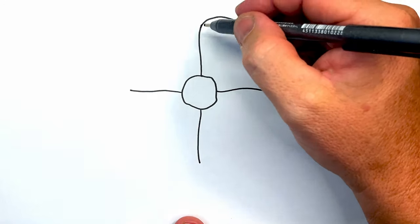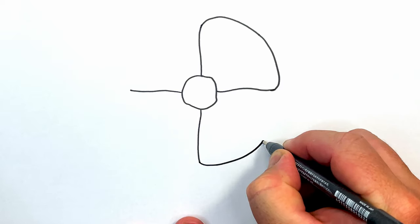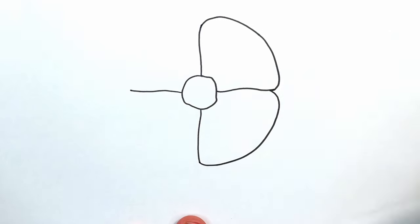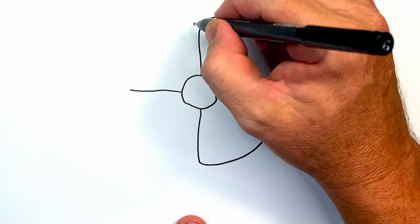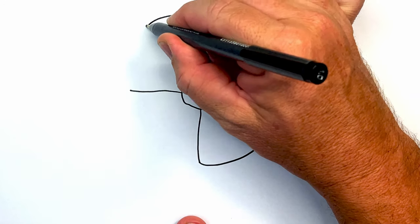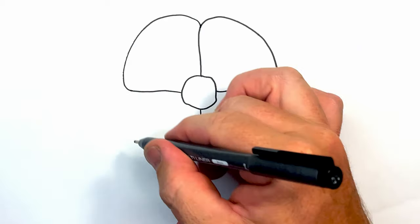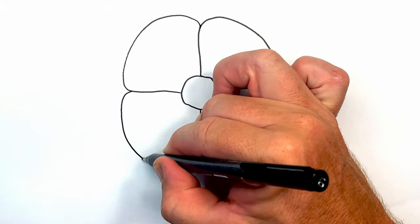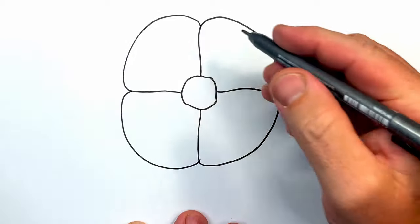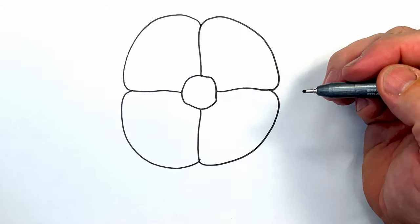So see how I've curved that around, I've got to do the same on these four others, these make the petals of the poppy. So four curved shapes that come around like so. And they almost form a circle for the poppy. So there's the basics of the poppy.